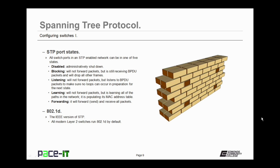All switch ports in an STP-enabled network can be in one of five states. First, there is the disabled state, where the port is administratively shut down — it's not receiving packets, not sending packets, it's completely disabled. Then there's the blocking state, where the port will not forward packets, but is still receiving BPDU packets and will drop all other frames.